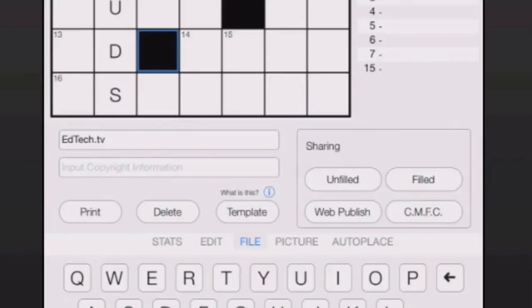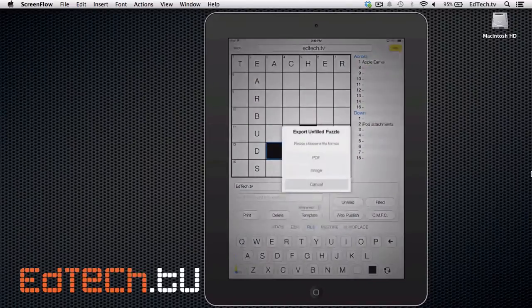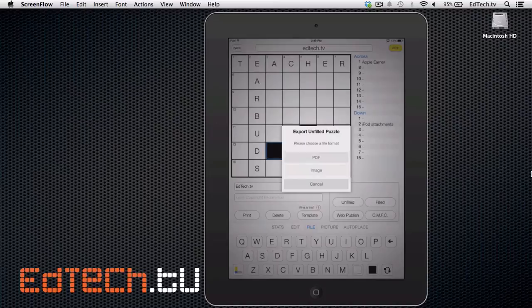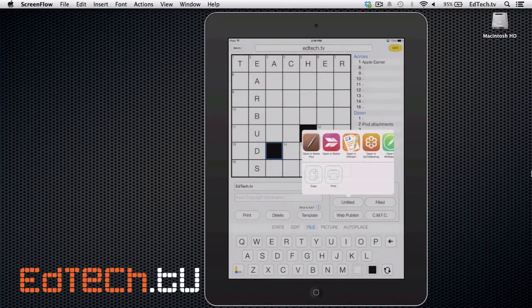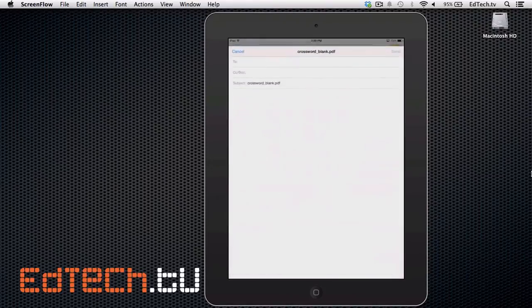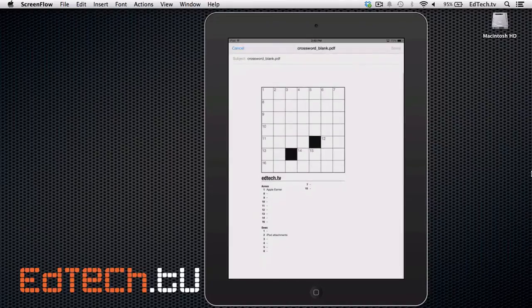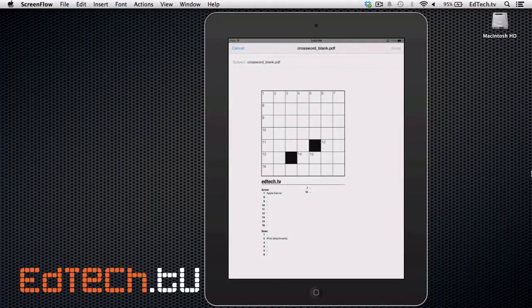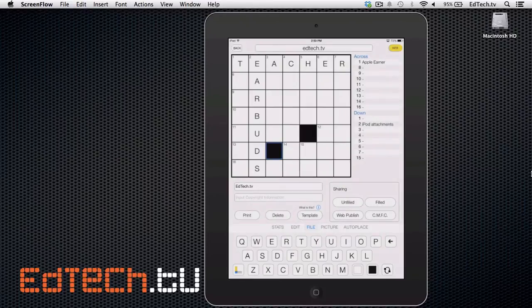Now, the section that says sharing is really cool. This is kind of your number one feature here. It says unfilled, filled, web publish, and CMFC. The first one is unfilled. So let's say that this is my crossword here. And I want to send this out unfilled. I would probably want to send it out as a PDF. Then it gives me all of these different apps that I can send it to. But I'll probably send it by mail. And here we go. You can see right there it's filled in with the information. Now, obviously, I didn't do a lot here. I didn't create a full crossword. So it doesn't look very good. But if I were to create a full crossword, then it would send everything out as a blank template. So this would be the one that I would print out for my students.